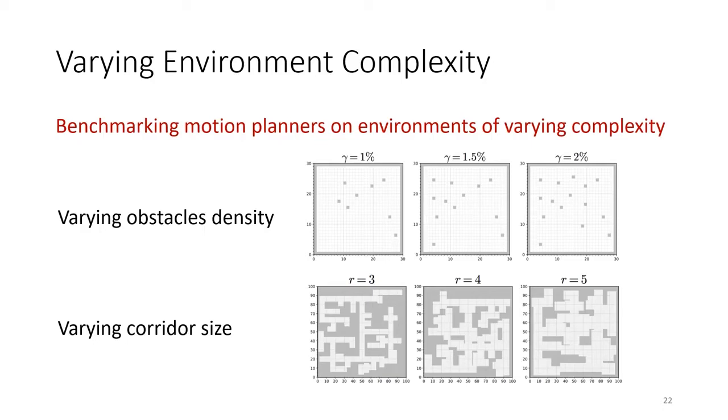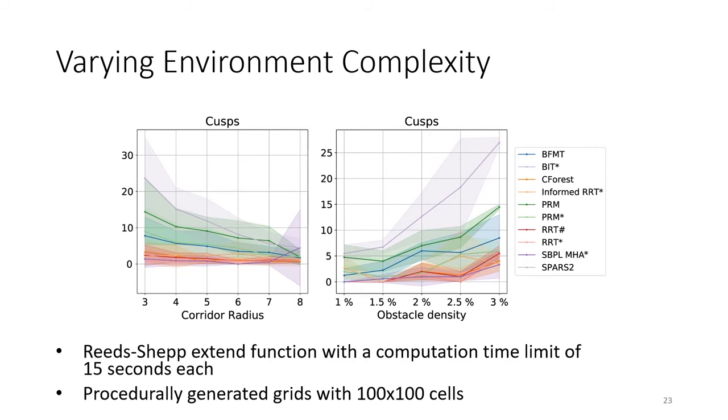As an example, we plot how the number of cusps of the paths of different motion planning algorithms using the Reeds-Shepp steer function vary with the environment complexity. Here, we change the minimum corridor width for random indoor-like grid-based environments and the percentage of blocked cells for random grids.